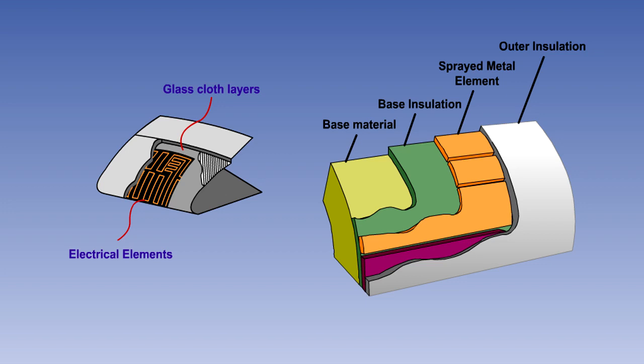In the sprayed metal system a base insulator is brushed directly onto the surface to be protected and then the electrically conductive metal is sprayed onto it. A further insulating layer is applied on top of this. The outer surface is then given a suitable protective coating. The resulting protected surface is known as a spray mat.